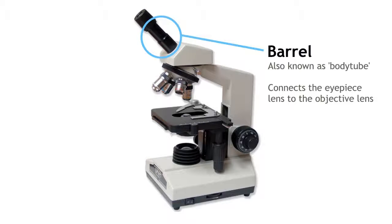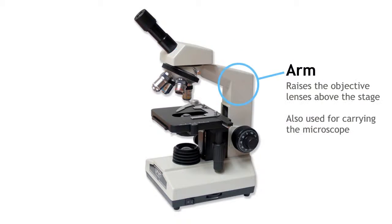The barrel, also known as the body tube, connects the eyepiece lens to the objective lens.